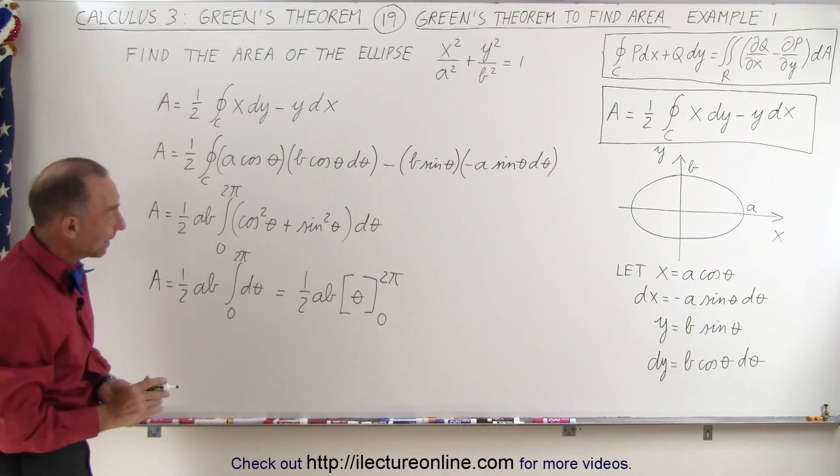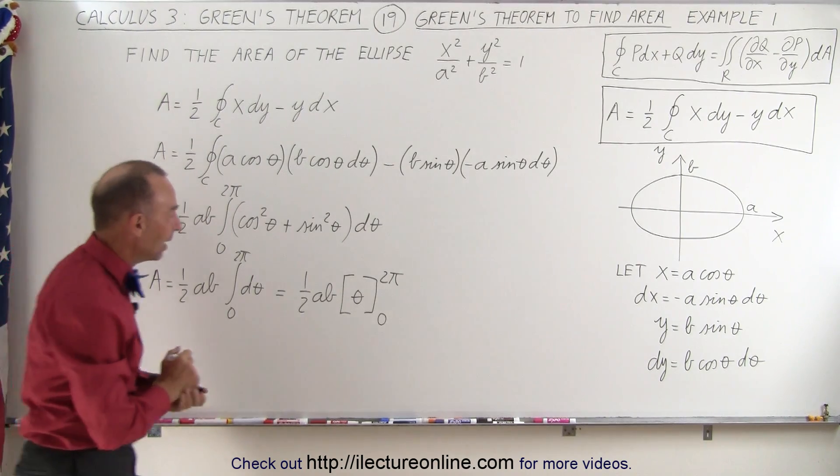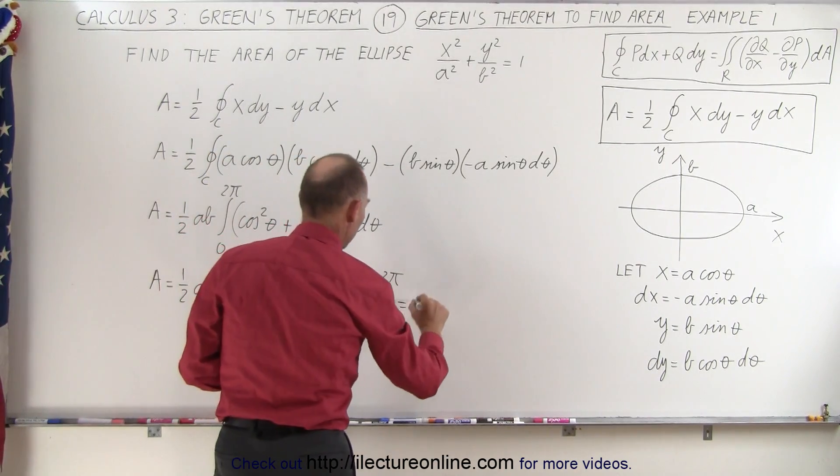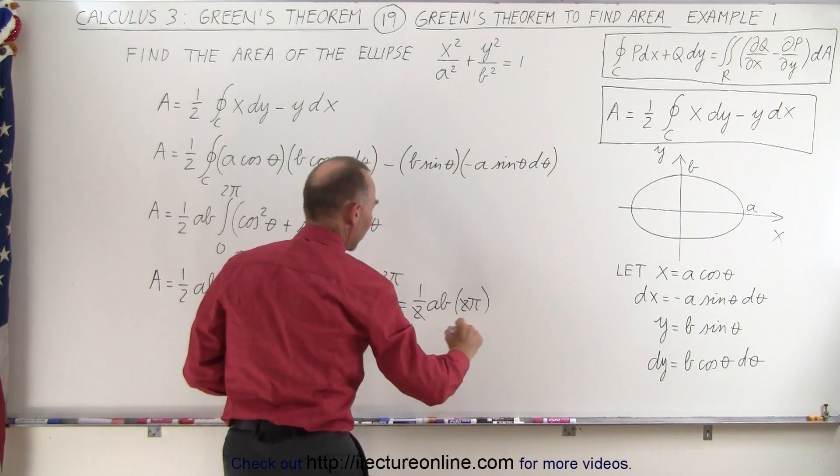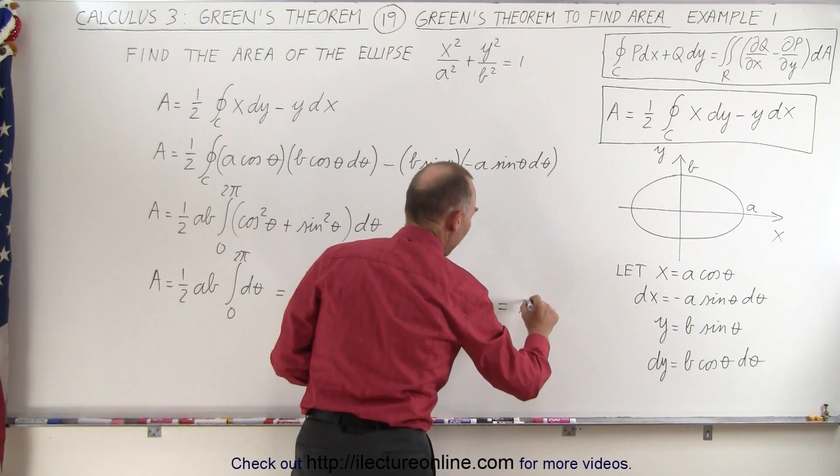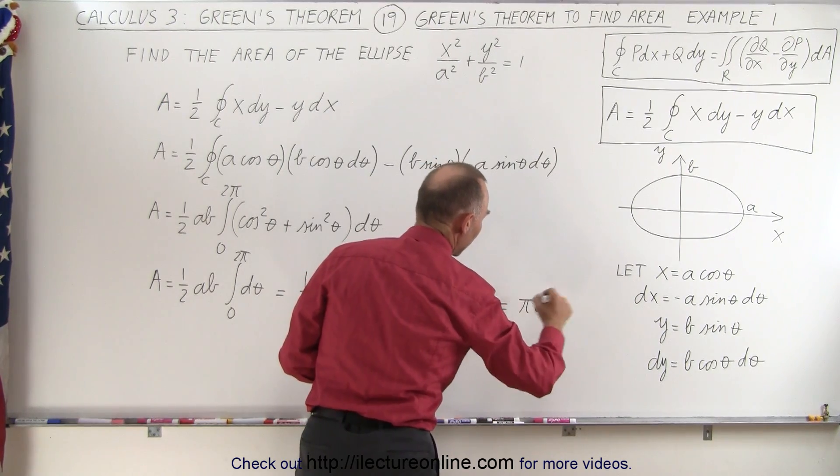Plug in the lower limit, we get nothing. Plug in the upper limit, we get two pi. Two pi, let's see, that would be one-half ab times two pi. The two's cancel out, so this is equal to pi ab, or ab pi.